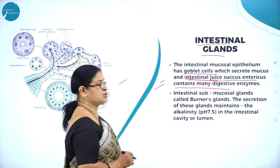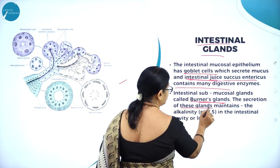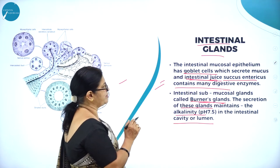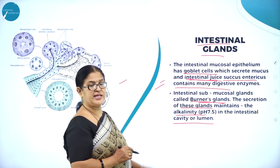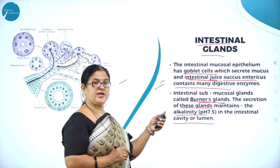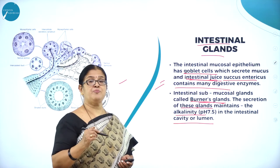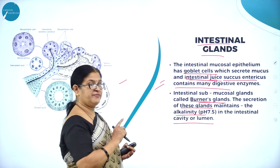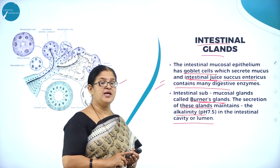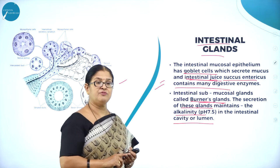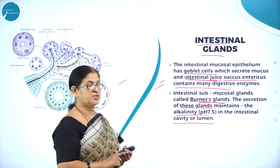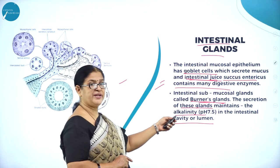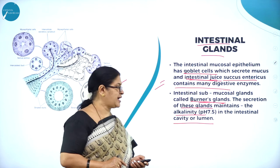Intestinal submucosal glands called Brunner's glands, and the secretion of these glands maintains the alkalinity — a pH of 7.5 — in the intestinal cavity or lumen. Succus entericus contains many digestive enzymes, and the final process of digestion of all food — carbohydrates, proteins, or lipids — takes place in the small intestine. Digestive enzymes from intestinal juice, along with pancreatic juice and bile juice, help in the final digestion.